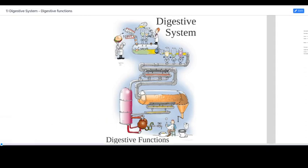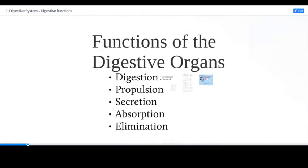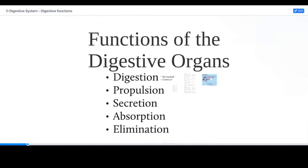To begin looking at the digestive system, we want to consider the broad range of functions that we associate with that system. This is a list of the functions we associate with the digestive organs. Obviously, the digestive system is going to digest things.